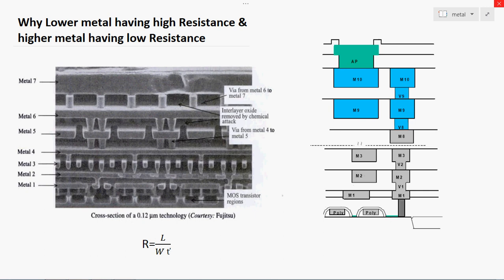The resistivity can be calculated by the formula R = Rs × L / (W × T), where T is the thickness of the metal, L is the length of the metal, W is the width of the metal, and Rs is the sheet resistance of the metal.